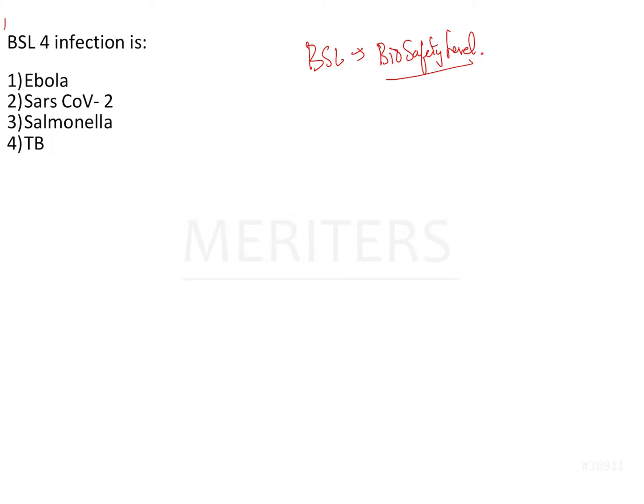We have four levels in BSL: Level 1, Level 2, Level 3, and Level 4. We can call them minimal, moderate, high, and very high. These are the BSL levels.